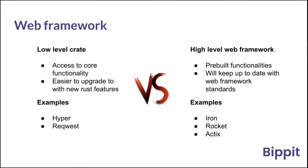If we go with a low-level crate, we can easily access core functionality without having to wait for it to be included in a framework. It's also easier to use new Rust features, since low-level crates get upgraded first. I believe every framework on the right is actually built on top of Hyper. So we ended up going with Hyper as our solution.